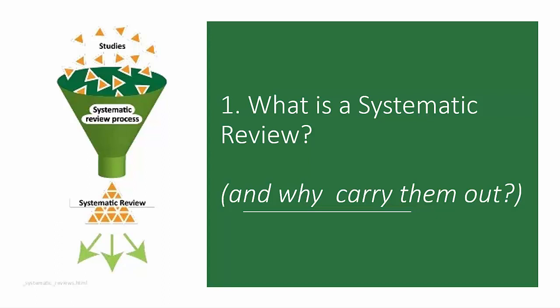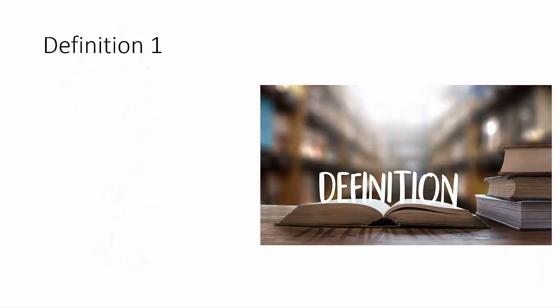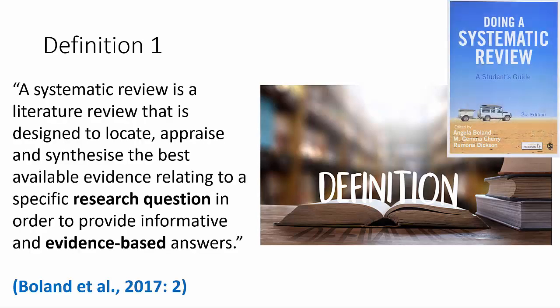I will be focusing on quantitative research involving numerical measures. Indeed, historically systematic reviews had originally only been quantitative research studies addressing quantitative research questions. I want to start with a couple of definitions. This first one is from Boland et al., which is a key standard text, and I'll be giving a list of all resources I recommend at the end of this video.